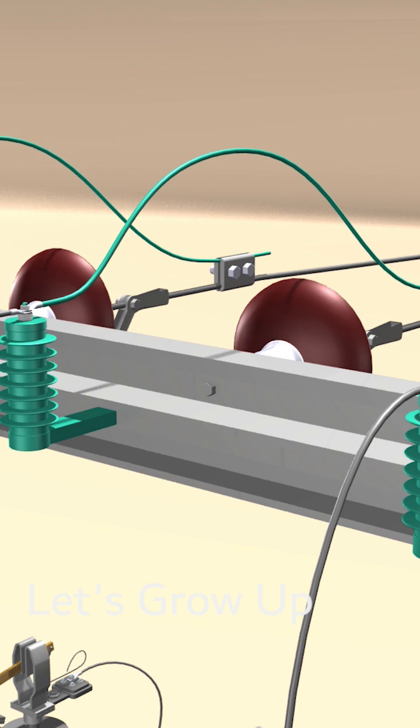These lightning arrestors are like shields for transformers, keeping them safe from lightning strikes by guiding the lightning's energy away.